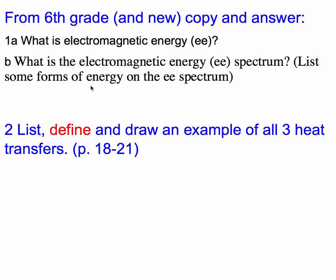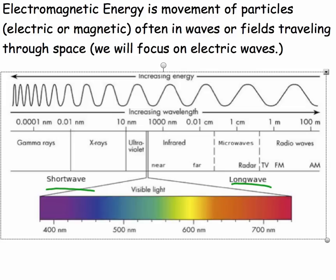So let's figure out what is electromagnetic energy and what is the spectrum and list some forms. Well, let's start with the easy part. Electromagnetic energy is the movement of particles. They can be electric particles or magnetic particles, often moving in waves or fields traveling through space, which we might call air or gas. We're mainly going to focus on electric waves as we progress forward.